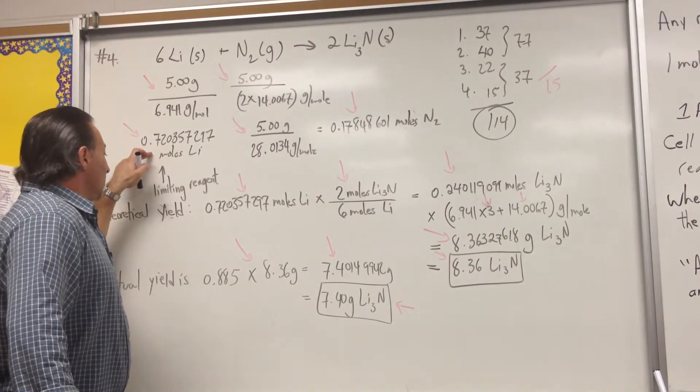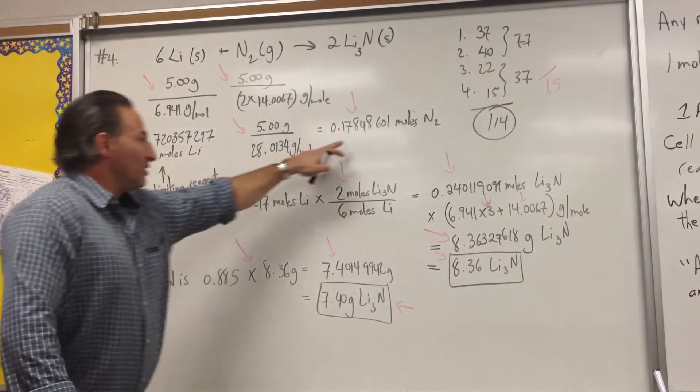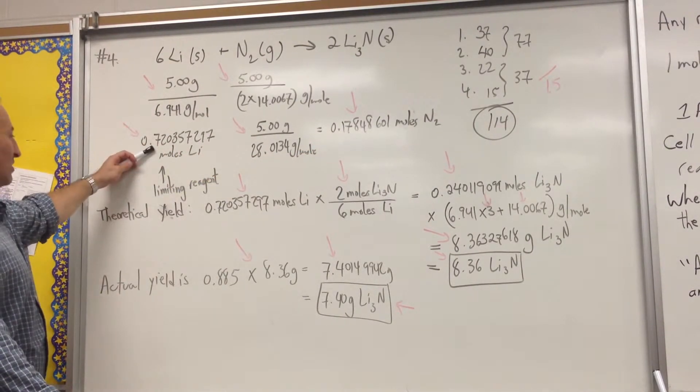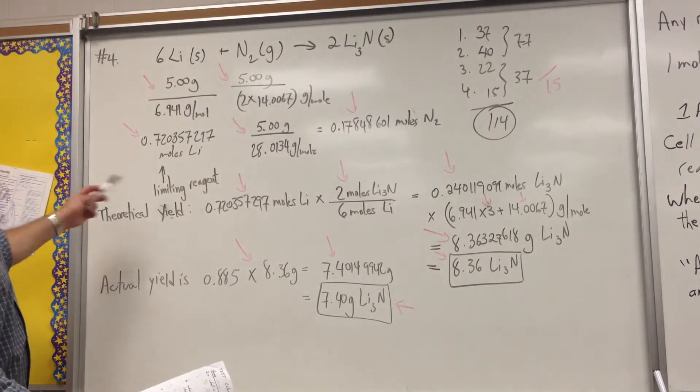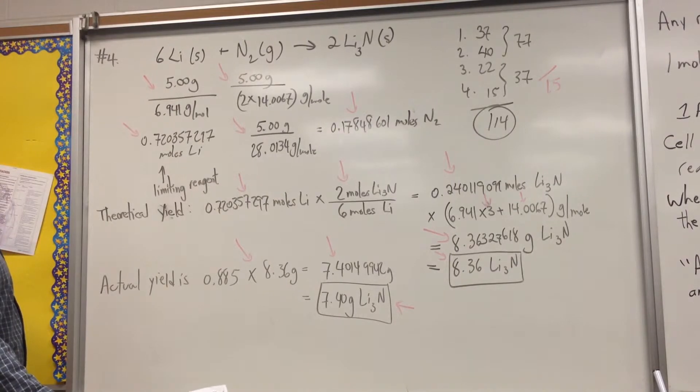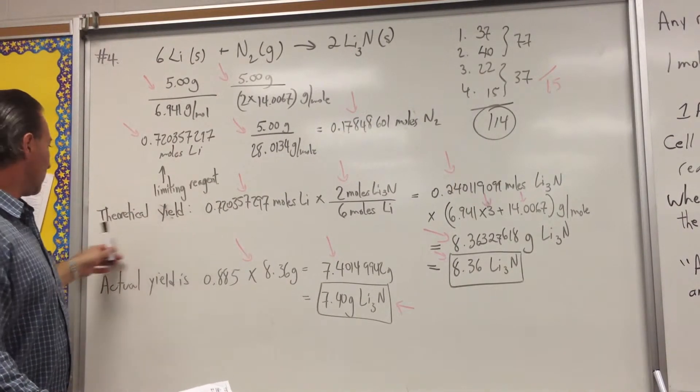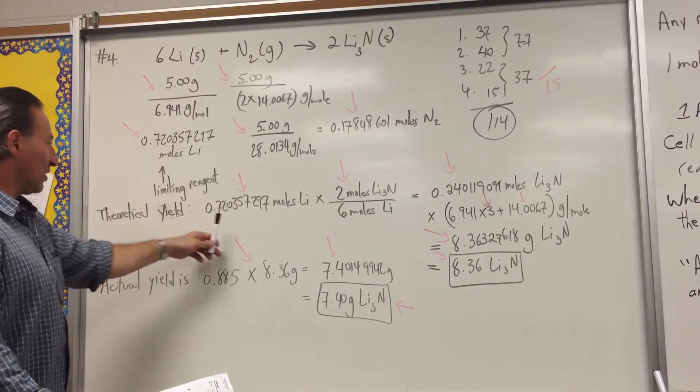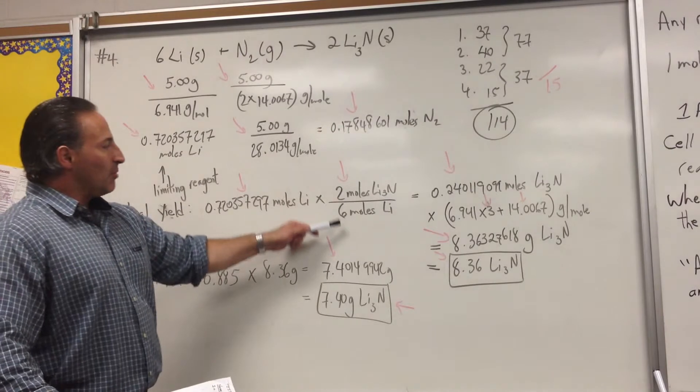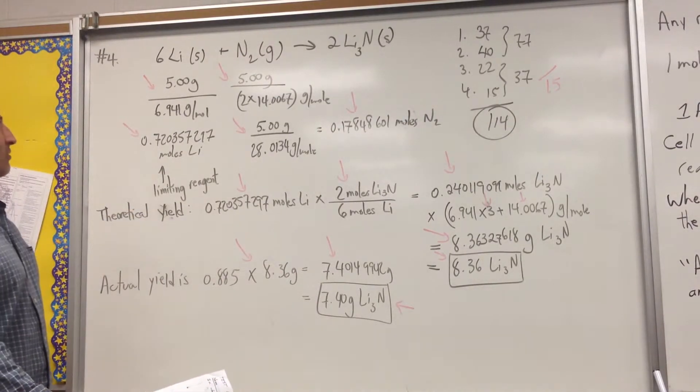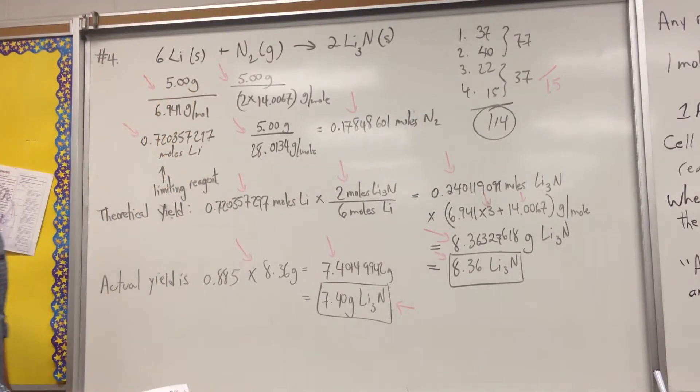And, in fact, the lithium is the limiting reagent. We see that 0.17 times 6 exceeds this number. So, this is the actual limiting reagent. So, we start our calculation from the limiting reagent. We have to find out the theoretical yield. We start with the limiting reagent, which is lithium. 0.72 moles of lithium times the stoichiometry for the production of lithium nitride. 6 moles of lithium will result in the formation of 2 moles of lithium nitride.